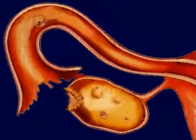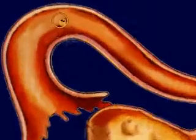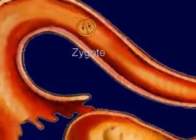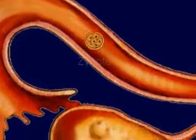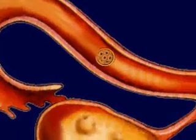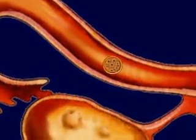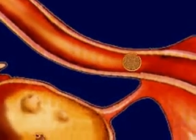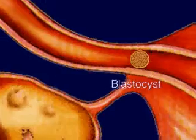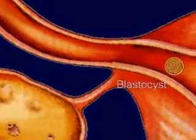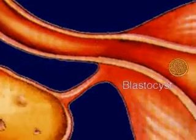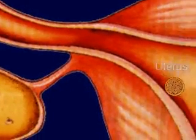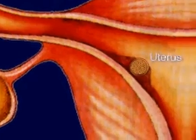Fertilization occurs, and the zygote continues its journey for seven to eight days to the uterus, dividing by mitosis to form a ball of cells called a blastocyst. The blastocyst becomes implanted in the thickened uterine wall, where it grows and develops into a fetus.